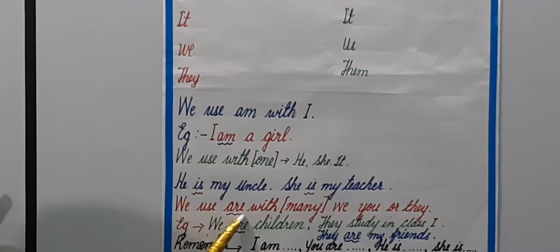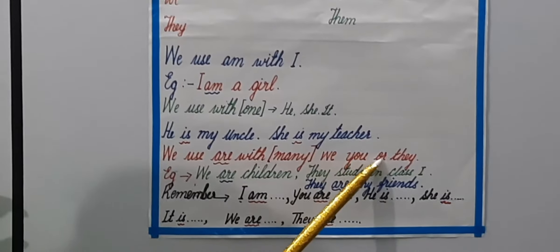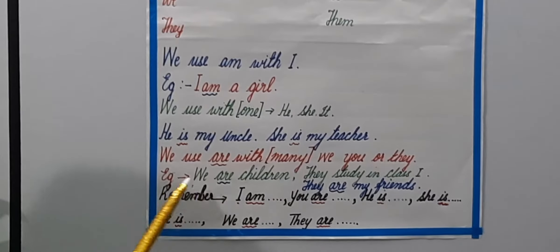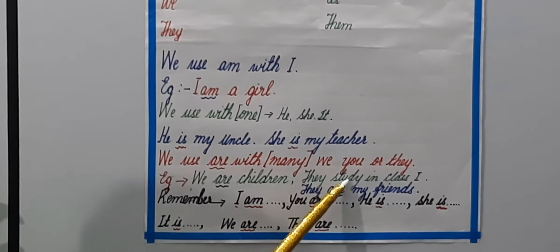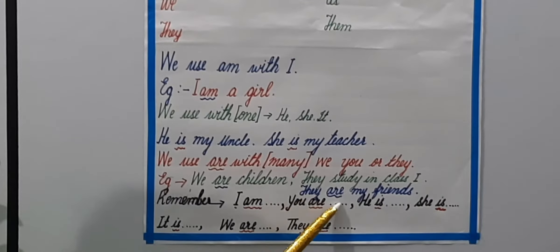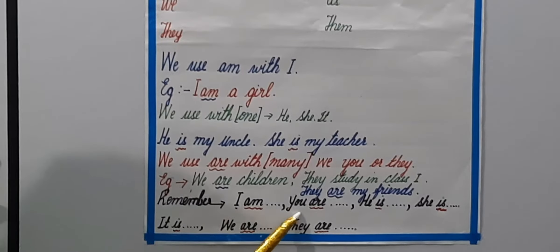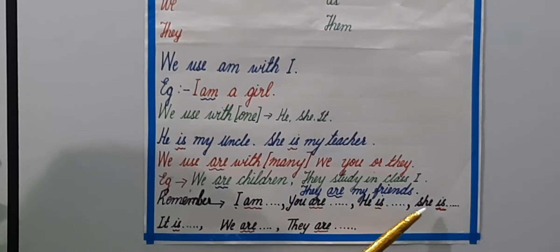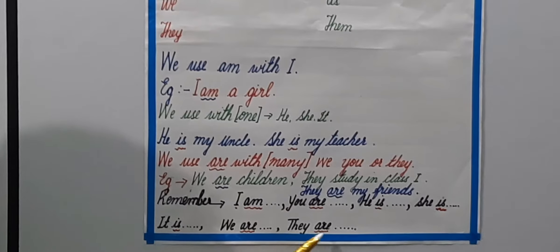We use 'are' with we, you, or they. For example: We are children. They study in class one. They are my friends. Remember: I am, you are, he is, she is, it is, we are, they are.